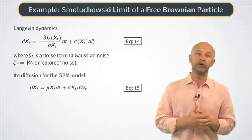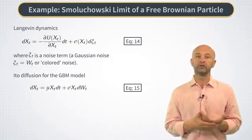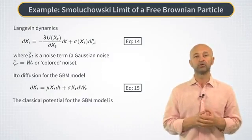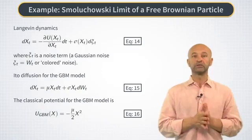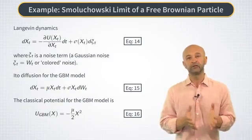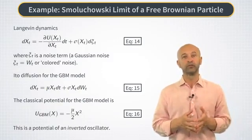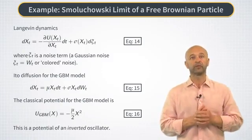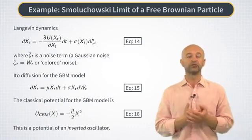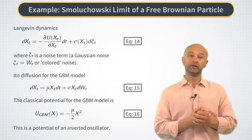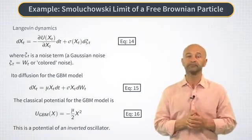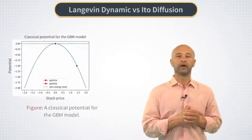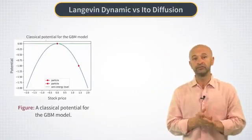So if we compare these two equations, we can conclude that the GBM model corresponds to a potential u of x, shown here in equation 16. And it's very interesting that this is a potential of an inverted harmonic oscillator. I say inverted because of the negative sign in its expression. This means a negative mass of a particle.